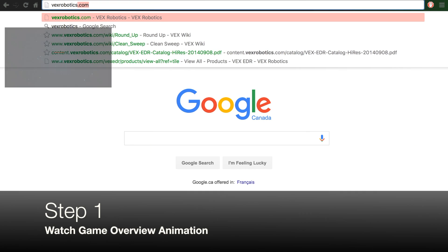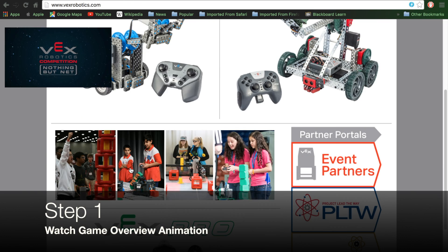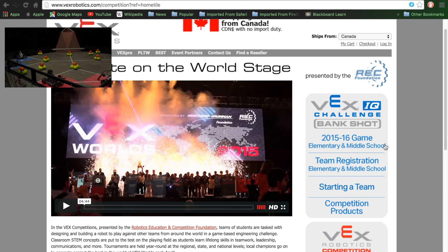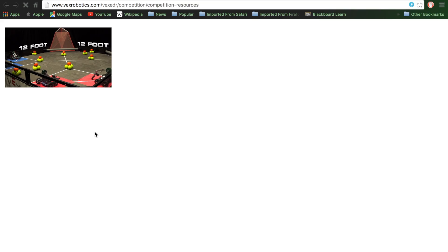Step 1: Watch the game overview animation for this season's game. You can find this just by searching for it using the search engine of your choice, or it is also on the VEX website.